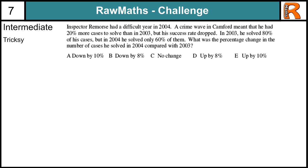Intermediate Tricksy from Raw Maths Challenge number 6. If you haven't had a go at this question yet, pause the video and give it a try now. Okay, this is quite a tricky question because it's all written in words. There's no hints of what's going on apart from the words. So we have to be very careful with what we're reading. Inspector Remorse had a difficult year in 2004. The crime wave in Camdorf meant that he had 20% more cases to solve than in 2003, but his success rate dropped. So we're looking at the number of cases, and we're looking at the solved cases. In 2003, which is our base year, he solved 80% of his cases.